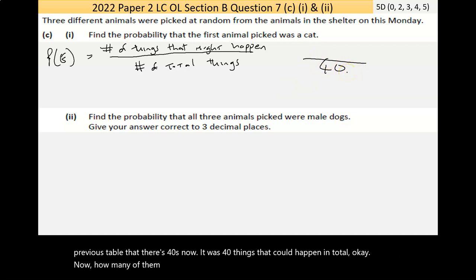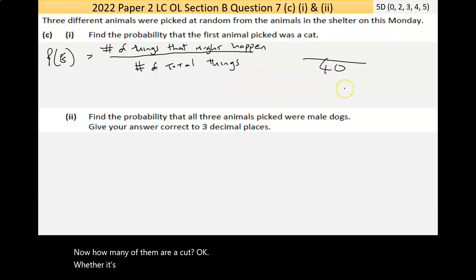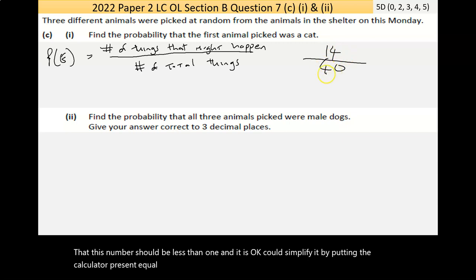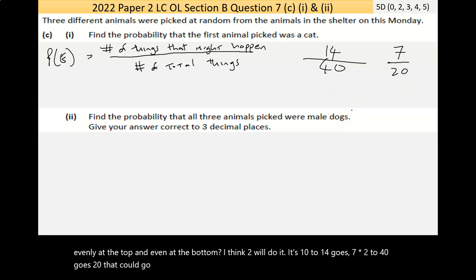Now, probability has a formula. It's not really necessarily given to you, but the probability of an event is given as the number of things that might happen all divided by the number of total things. Well, I know from the previous table that there's 40, there's 40 things that could happen in total. Now, how many of them are a cat? Well, there's 14 cats. So it's 14 out of 40. Now, this number should be less than 1, and it is. I could simplify it by putting the calculator and pressing equal. Or if I look top and bottom, is there any number that will divide evenly at the top and evenly at the bottom? I think 2 will do it. 2 into 14 goes 7 times. 2 into 40 goes 20.